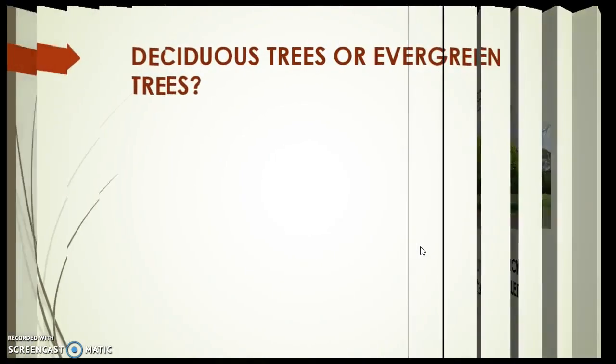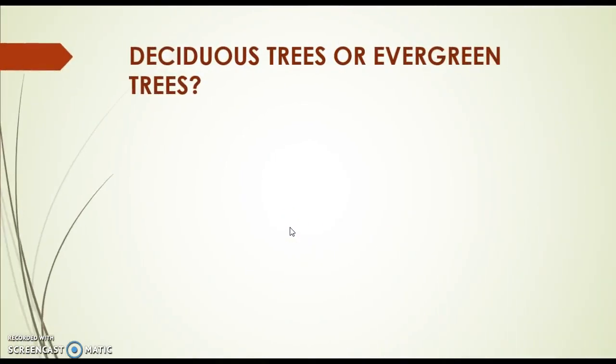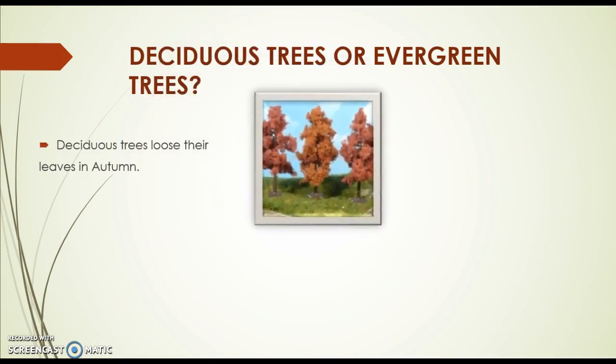Okay, so also in this unit we're going to talk about the different types of trees. We have deciduous trees or evergreen trees. The deciduous trees lose their leaves in autumn. As you can see in this picture.